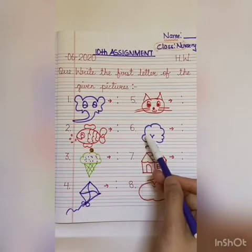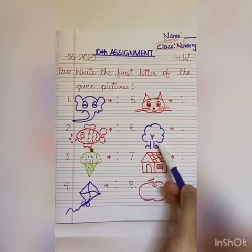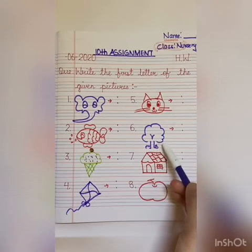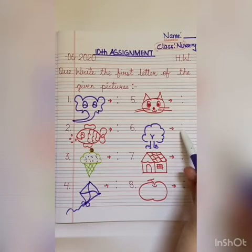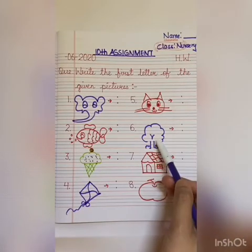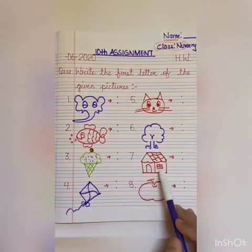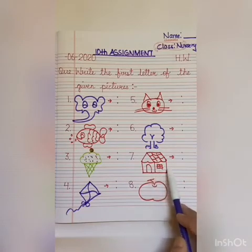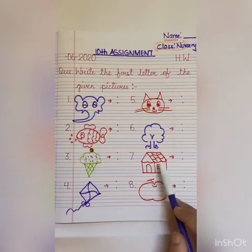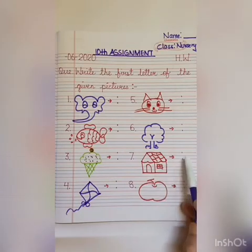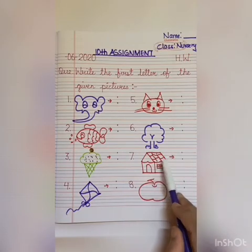Come to number six — what is this? Yes, this is a tree. So the first letter of tree is T. You will write T. T, tree. Number seven — what is this? Yes, it is a house. So the first letter of house is H. You will write H. H, house.